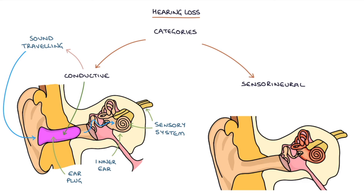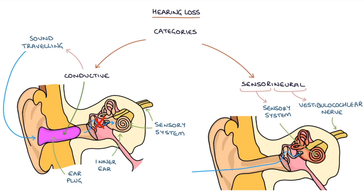Sensorineural hearing loss is caused by a problem with the sensory system or the vestibulocochlear nerve in the inner ear. The sound is reaching the inner ear, but it can't be sensed properly or transmitted to the brain properly.